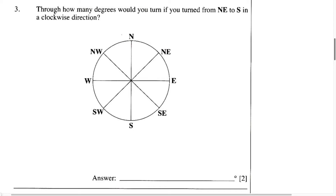This question says: through how many degrees would you turn if you turned from northeast to south in a clockwise direction? Let's read it one more time. Through how many degrees — the word degrees is very important — would you turn if you turned from northeast to south, in a clockwise direction?